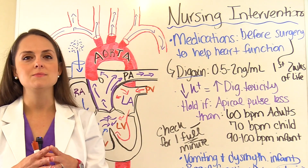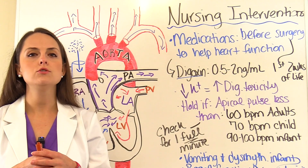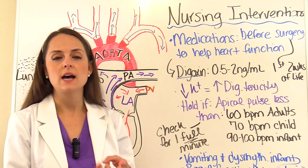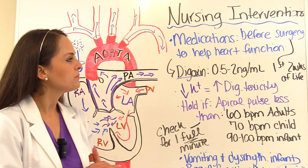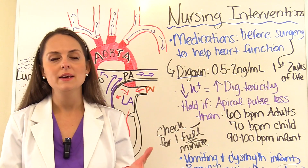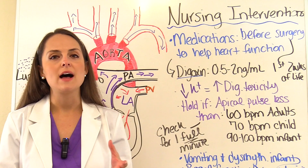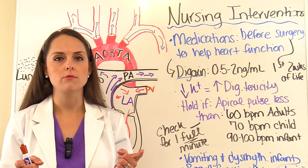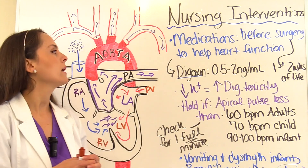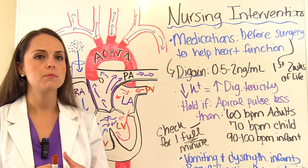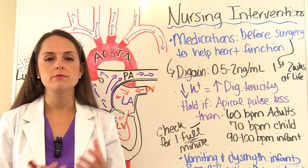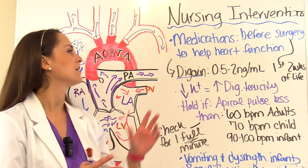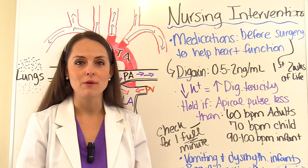Before surgery, medications are started to preserve heart function and manage heart failure. One medication is digoxin. You must measure therapeutic levels — the therapeutic range is 0.5 to 2 nanograms per milliliter. Anything greater than 2 nanograms per milliliter is considered digoxin toxicity. On exams, you may be given a level and asked whether to give or hold the medication.